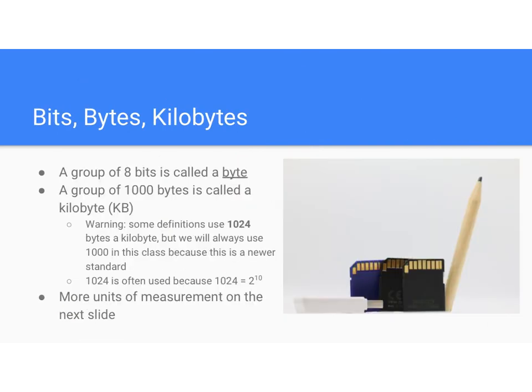After bits, we talk about something called bytes. It gets cumbersome to always be talking about bits, zeros and ones, ons and offs. Saying that the color green is represented by some long binary string —